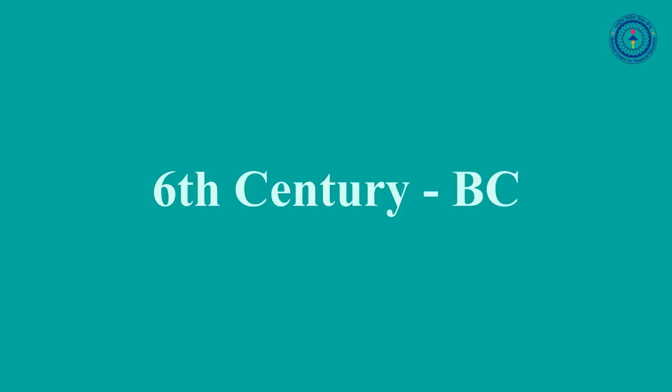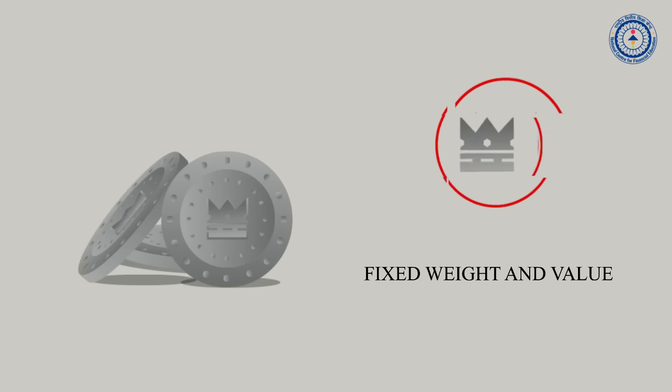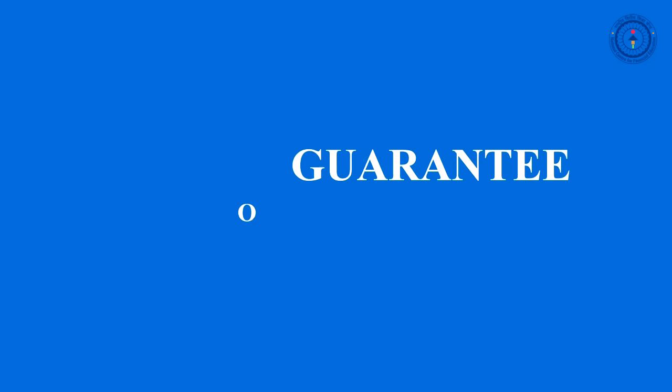But what was the alternative? Around the same time, metals were discovered and took over the ancient world. In the 6th century BC, the first coins appeared. They were small metal pieces with fixed weight and value, bearing an official seal — the mark of the government who minted them and a guarantee of their value.